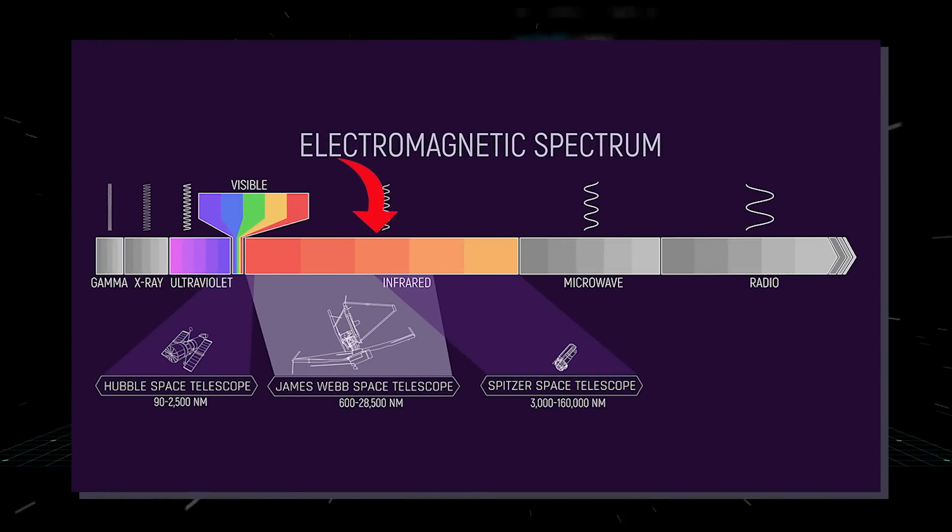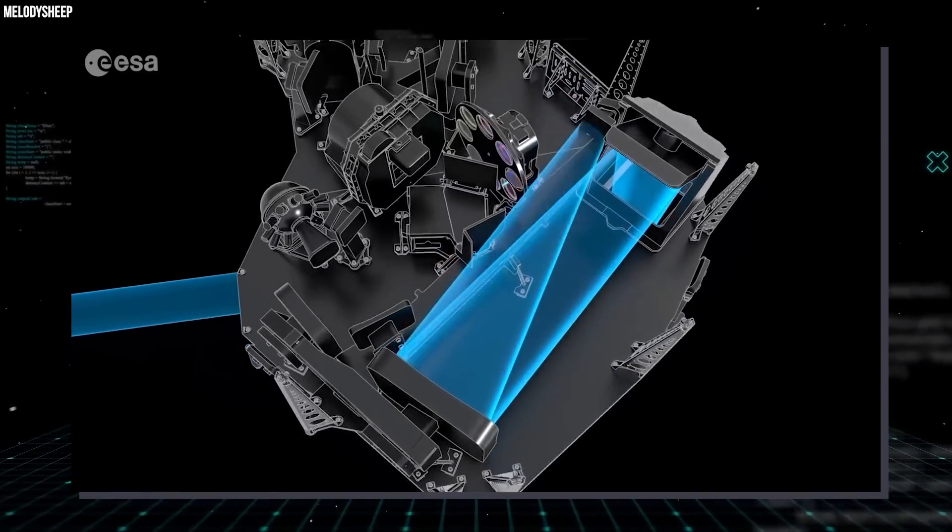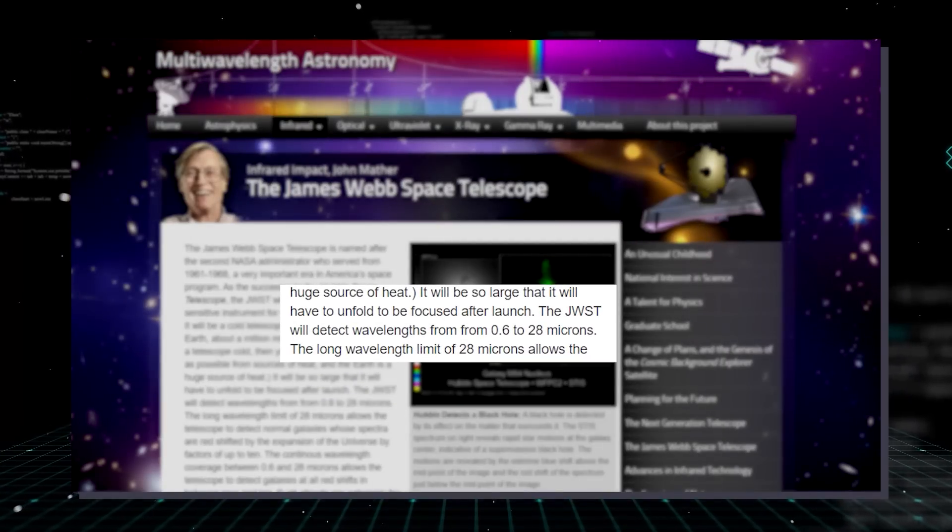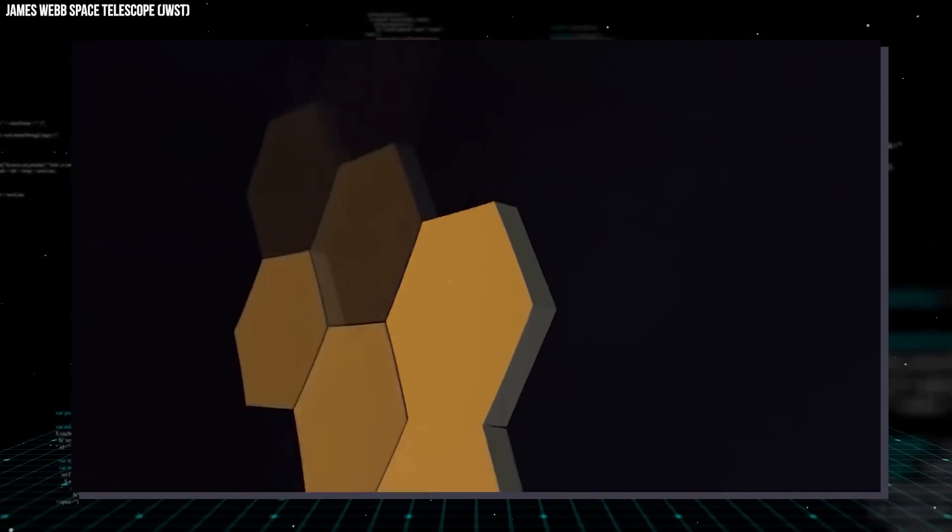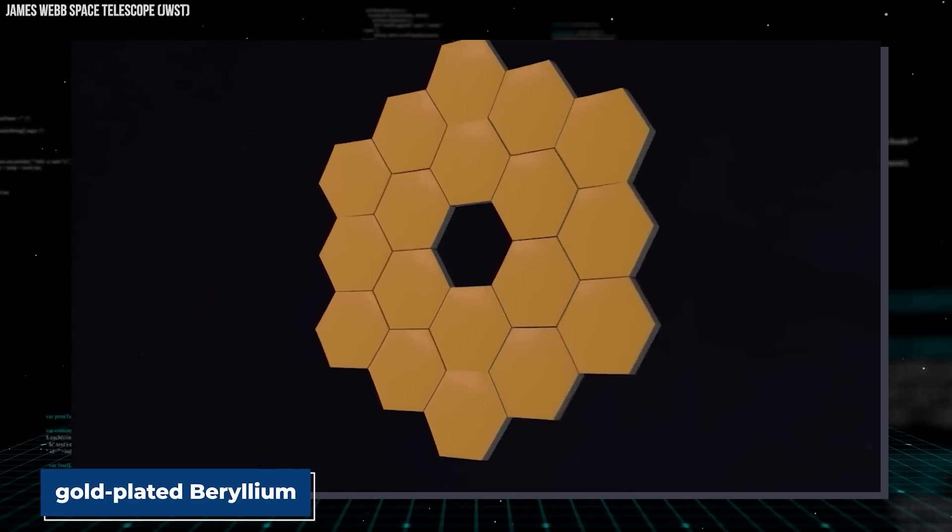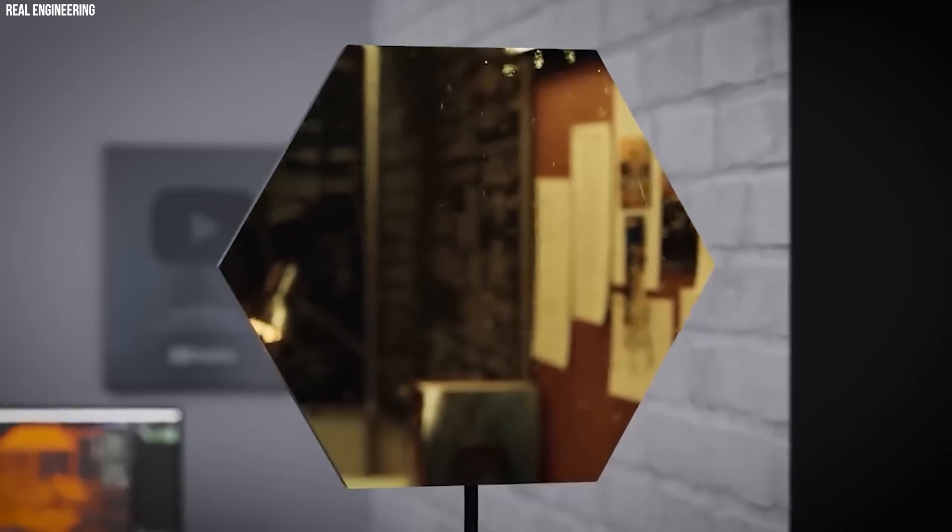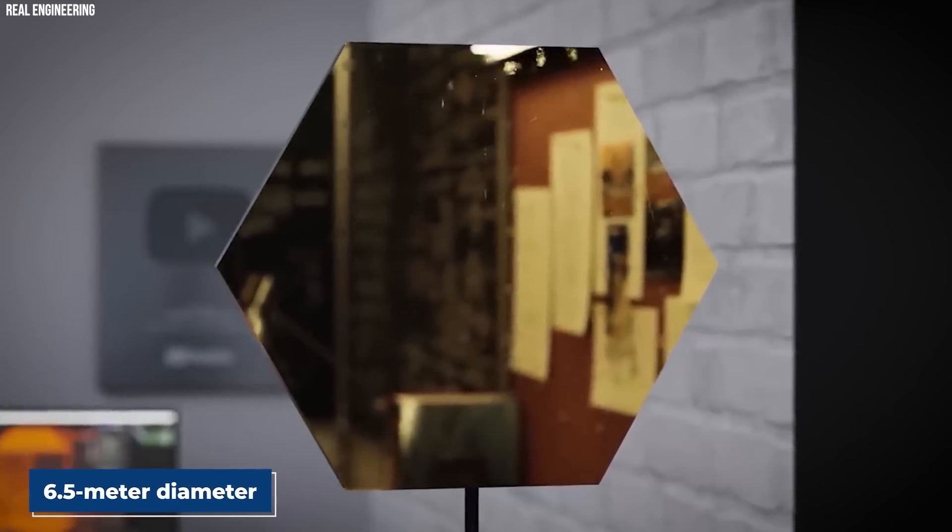It has been designed to observe a lower frequency range than Hubble, mainly from long wavelength visible light through mid-infrared wavelengths. It can visualize wavelengths made from 0.6 to 28 micrometers. Its primary mirror is made up of 18 hexagonal mirror segments made of gold-plated beryllium. These combine to form a mirror having a 6.5-meter diameter.